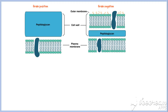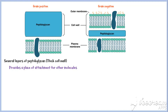Here is an image of the cell walls of gram-positive and gram-negative bacteria. The gram-positive cell wall has several layers of peptidoglycan. The thick layers of peptidoglycan help to support the cell membrane and provide a place of attachment for other molecules. Therefore, the gram-positive cell wall retains most of the crystal violet stain used in gram staining. Thus, gram-positive bacteria appear in purple after the staining process.